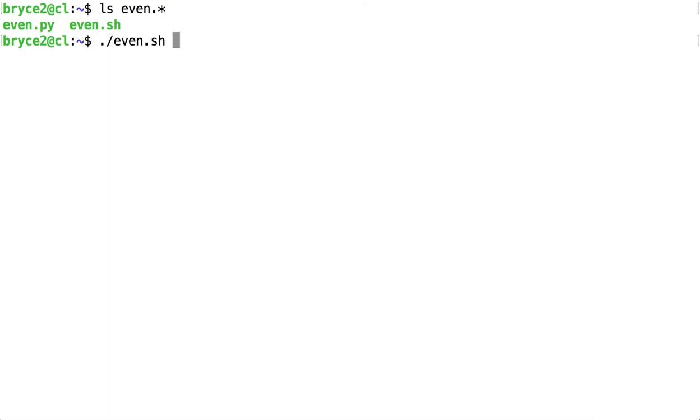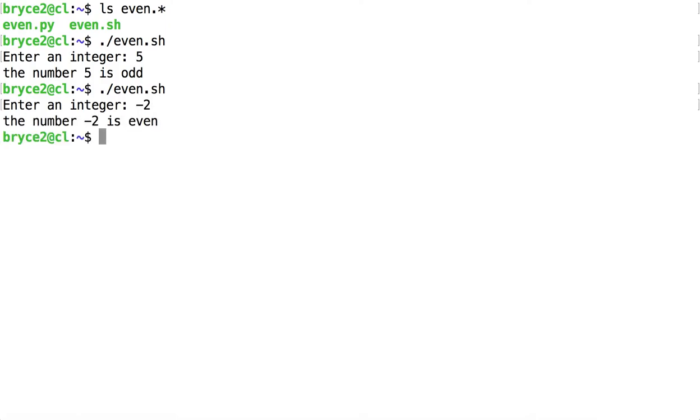So I could run even.sh, and it's going to prompt me for an integer. We find out that the number 5 is odd. I could run it again, enter negative 2, and negative 2 is even.